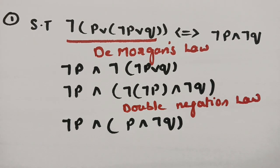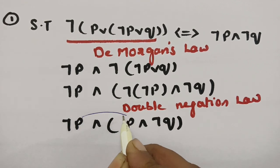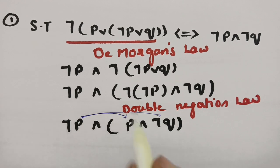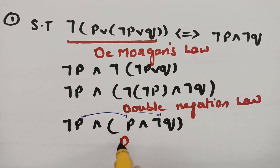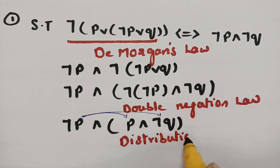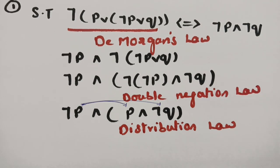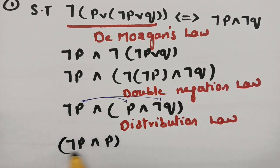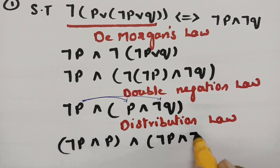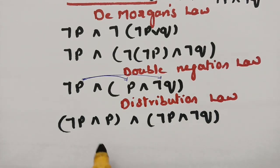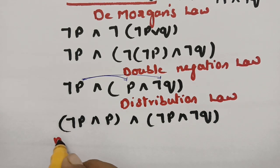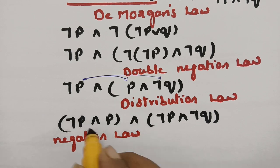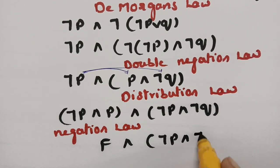Next, I apply the distribution law. I distribute negation P across (P and negation Q). Sending negation P inside gives: (negation P and P) or (negation P and negation Q). Now applying the negation law: negation P and P is nothing but false. So we have: false or (negation P and negation Q).